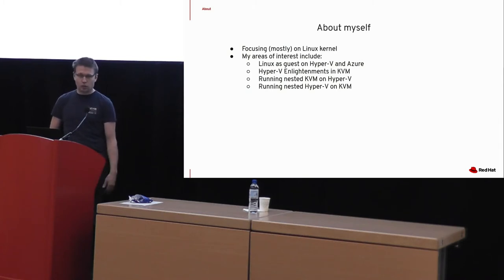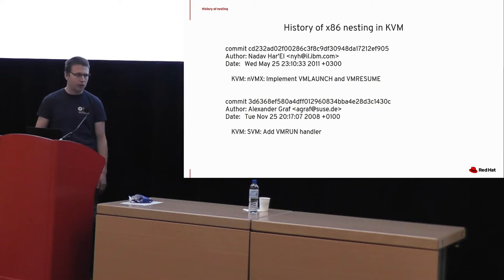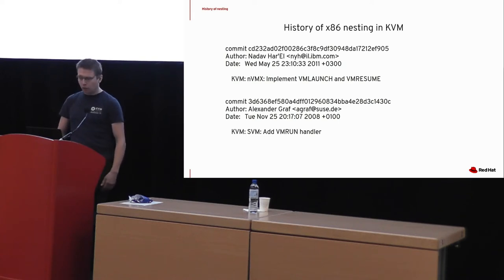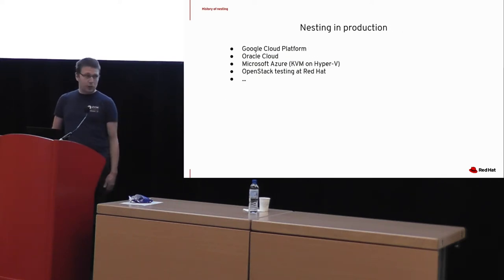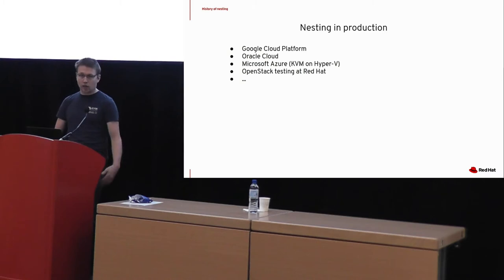I decided to take a look at how we actually test nested virtualization. Nesting on x86 is not a new feature at all — Alex first introduced nesting on AMD more than ten years ago, then we got it on Intel. For quite some time it was rather a baroque feature, not properly tested and not that many people were using it. But nowadays we know it's used in production — you can get a VM on Google Cloud where nesting is enabled, and on Oracle Cloud. So it's becoming more and more stable, but still sometimes we do have regressions.